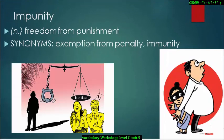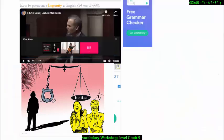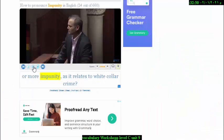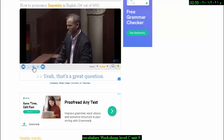The next word is impunity. Impunity is a noun which means freedom from punishment or exemption from penalty. Impunity or immunity. Or more impunity as it relates to white collar crime. Yeah, that's a great question.